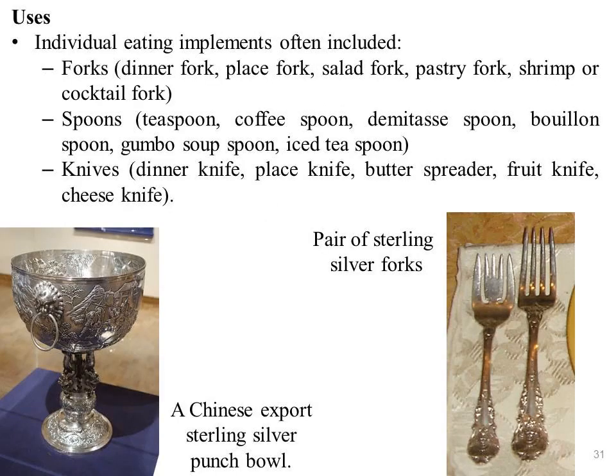What are the uses of this alloy? Individual eating implements often include forks, spoons, and knives — these are the uses of alloys. Different types of forks, spoons, and knives are shown in the diagrams.